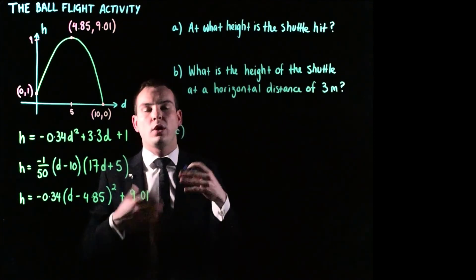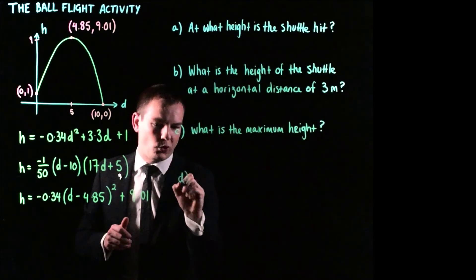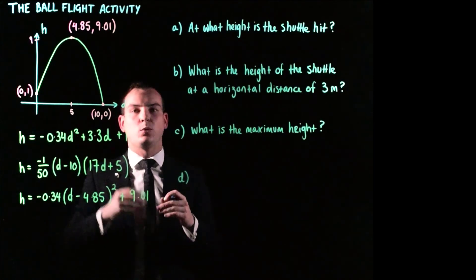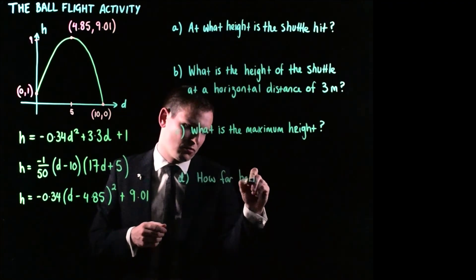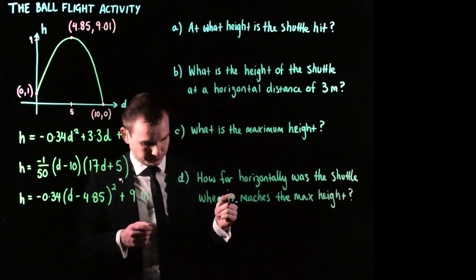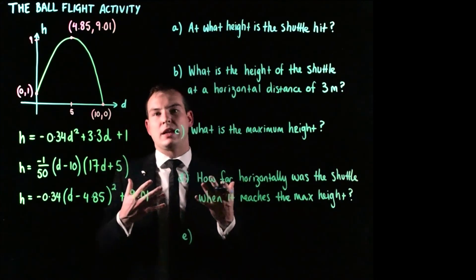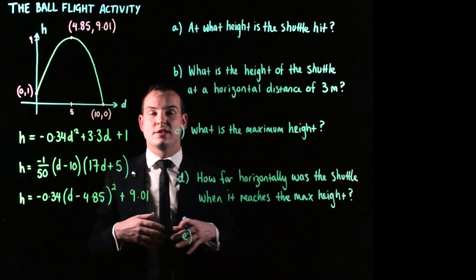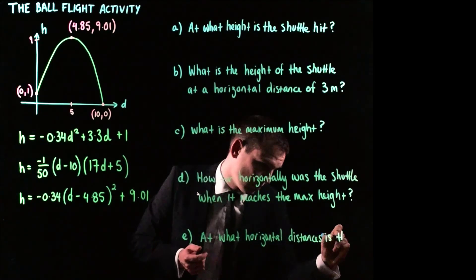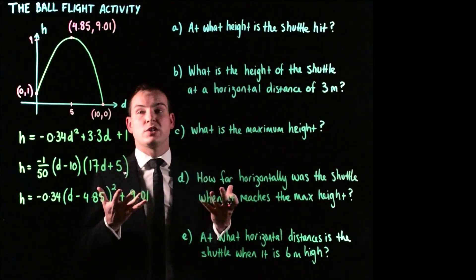And again, I won't answer this right now, but I'll put the answer up in a moment for you. Another question could be, what is the maximum height of the shuttle? And now for the fourth part of these set of questions, we could ask another thing relating to the maximum height. And that is, how far horizontally was the shuttle when it reached its maximum height? And finally, we could pose a question that is our fifth part. It's going to be, at what horizontal distances is the shuttle when it's at a height of six metres?